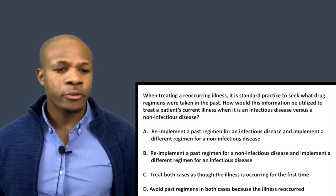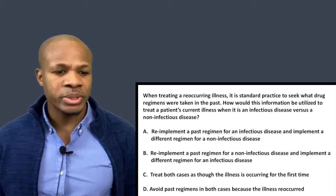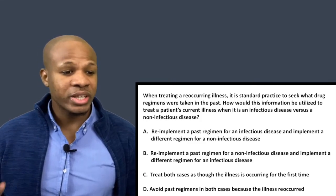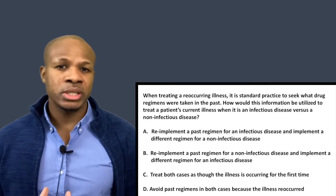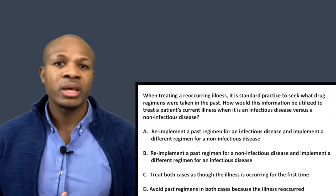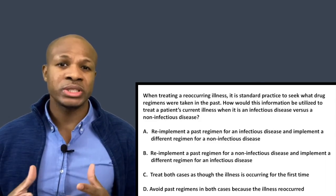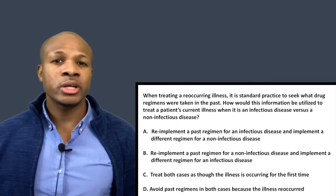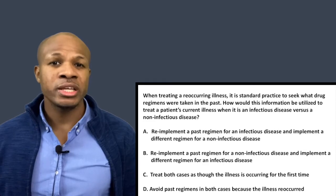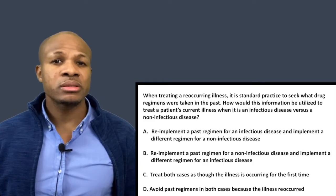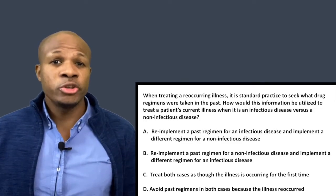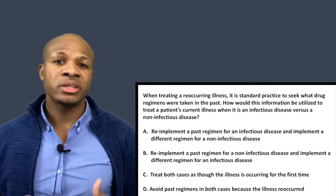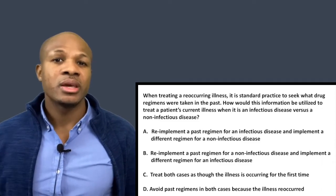Question number four: when treating a recurring illness it is standard practice to seek what drug regimens were taken in the past. How would this information be utilized for an infectious disease versus a non-infectious disease? With a recurring illness, you want to ask: did the drug regimen taken in the past alter the drug target? If the past regimen caused the drug target to change, you might want to give the patient a different drug regimen. If it did not alter the drug target, you can give the same regimen as long as it was shown to have worked.